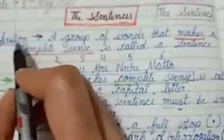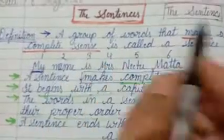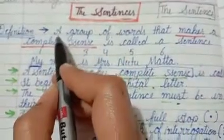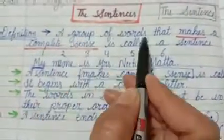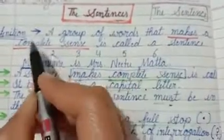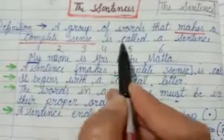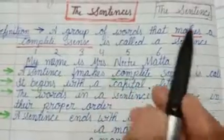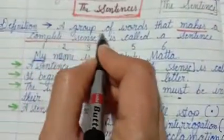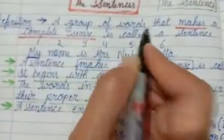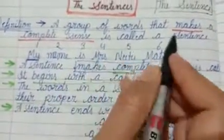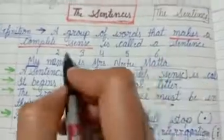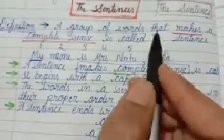Firstly, I am giving you the definition. What is the definition of a sentence? A group of words that makes a complete sense is called a sentence. That group of words that makes complete sense is called a sentence.